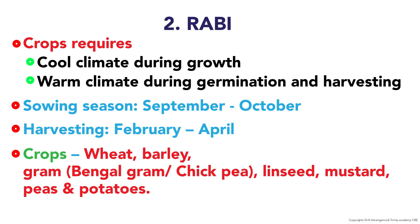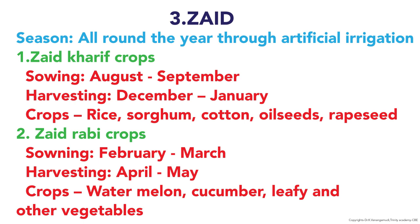Rabi seeds are sown during September and October and the crop is harvested during February–April. Zaid season runs all year round through artificial irrigation. Zaid Kharif crops include rice, sorghum, cotton, and oilseeds; seeds are sown in August–September and harvested in December–January. Zaid Rabi crops have sowing in February–March and harvesting in April–May.